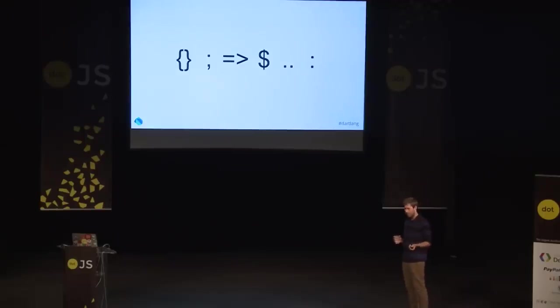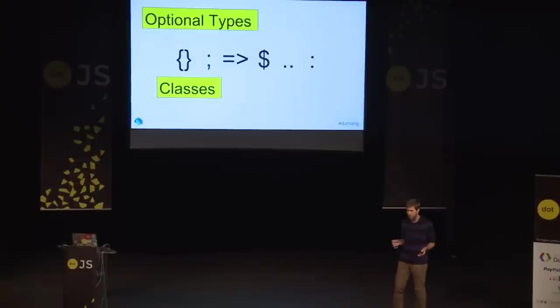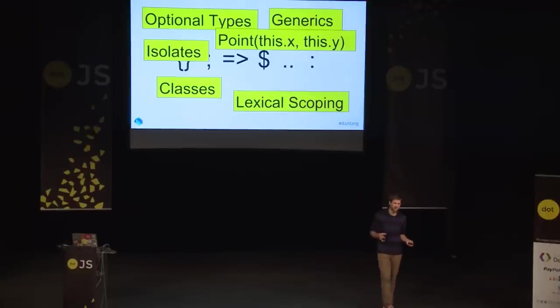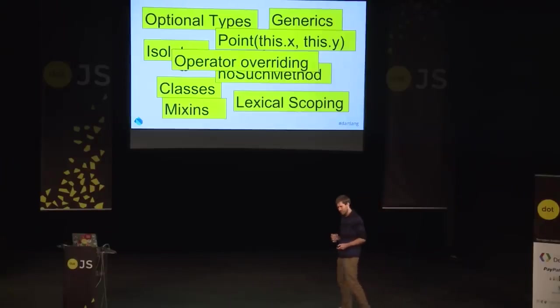So that's the syntax, but we have way more. We have classes. We have optional types — you don't have to put types in your code, you can just put var, or if you want to, you put the types and get type checking from the IDE or an analyzer. We have generics, lexical scoping, no more weird 'this'. Isolates — kind of a web worker but with more features. We have syntactic sugar for initializing fields. What is the most common thing you do when you have a constructor? Take parameters, initialize the fields. Here, you just say what the field names are — x, y — and they get initialized. We have mixins and operator overriding, so you can do matrix plus matrix, vector plus vector.